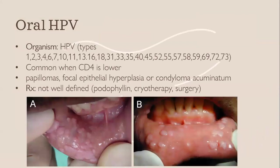Oral human papillomavirus infection is also common when the CD4 count is lower. It can present as papillomas, focal epithelial hyperplasia, or condylomata acuminata. The treatment is not well defined but has been suggested to include podophyllin, prior therapy, and surgery.